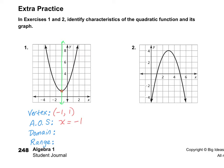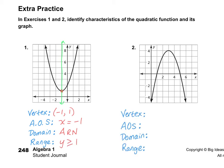The domain is all of the x values. Since there are arrows pointing outward, we know this graph will continue going on forever, so the domain is all real numbers. The range is all of the y values being used. In our range, we're starting at positive 1 and heading up, so the range is y greater than or equal to positive 1. Please find the vertex, axis of symmetry, domain, and range for problem number 2.